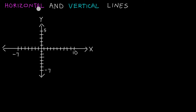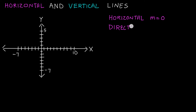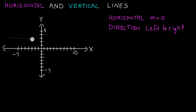A horizontal line is a line that goes from left to right. It has a slope of zero. So for a horizontal line, we have a slope which we'll refer to as the letter M, and the slope is zero. The direction of a horizontal line is left to right. If I was to draw a horizontal line on this x-y coordinate system, I could do that by making it parallel to the x-axis — just a horizontal line right about there. It's parallel to the x-axis, goes left to right, and has a slope of zero.